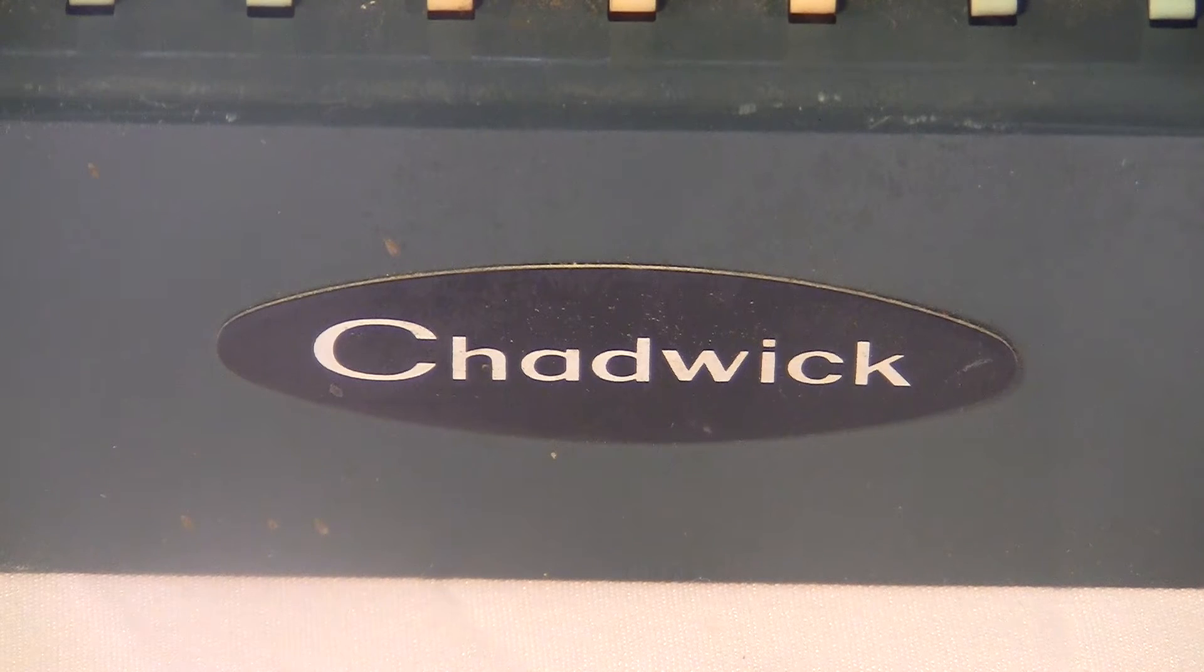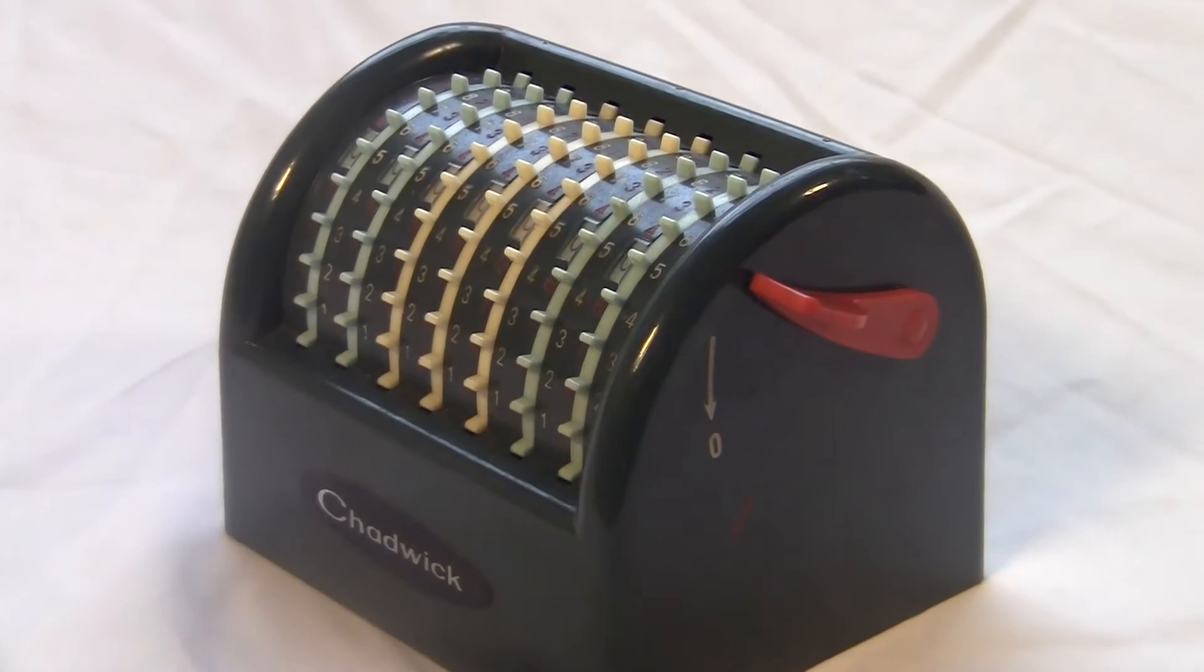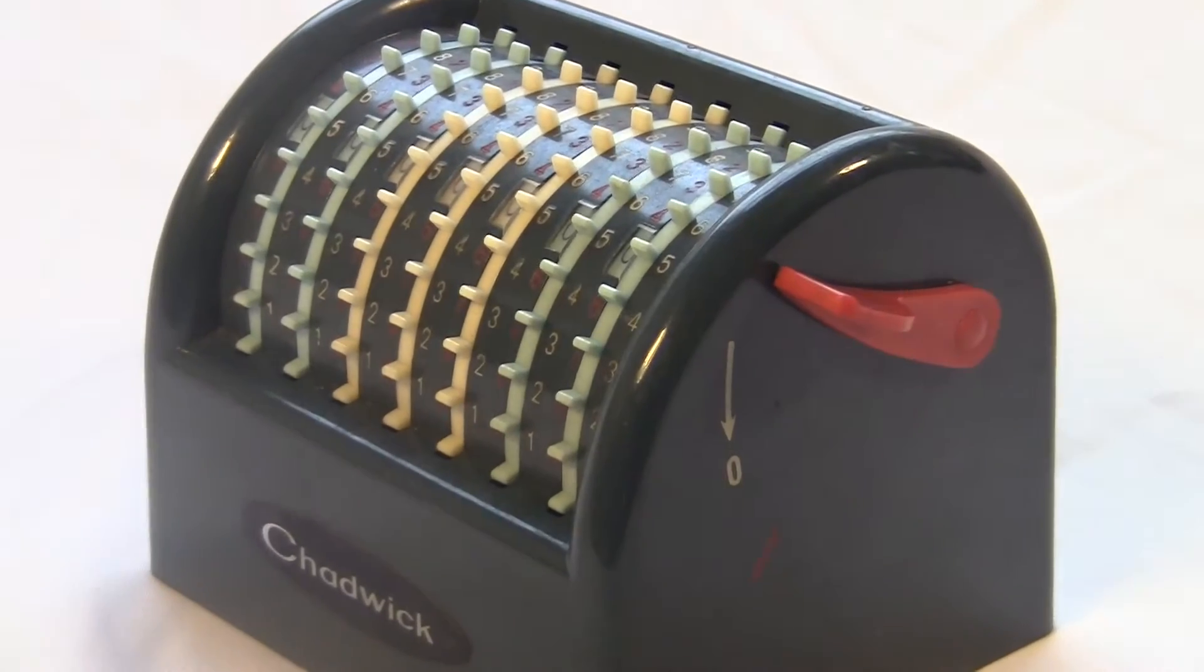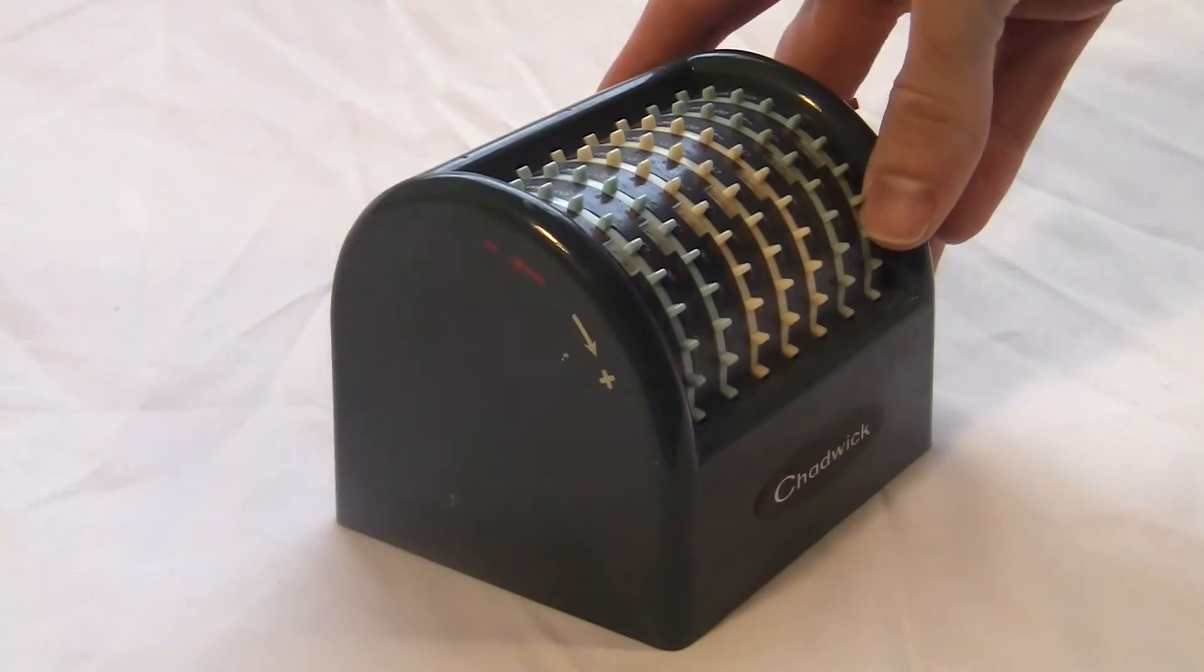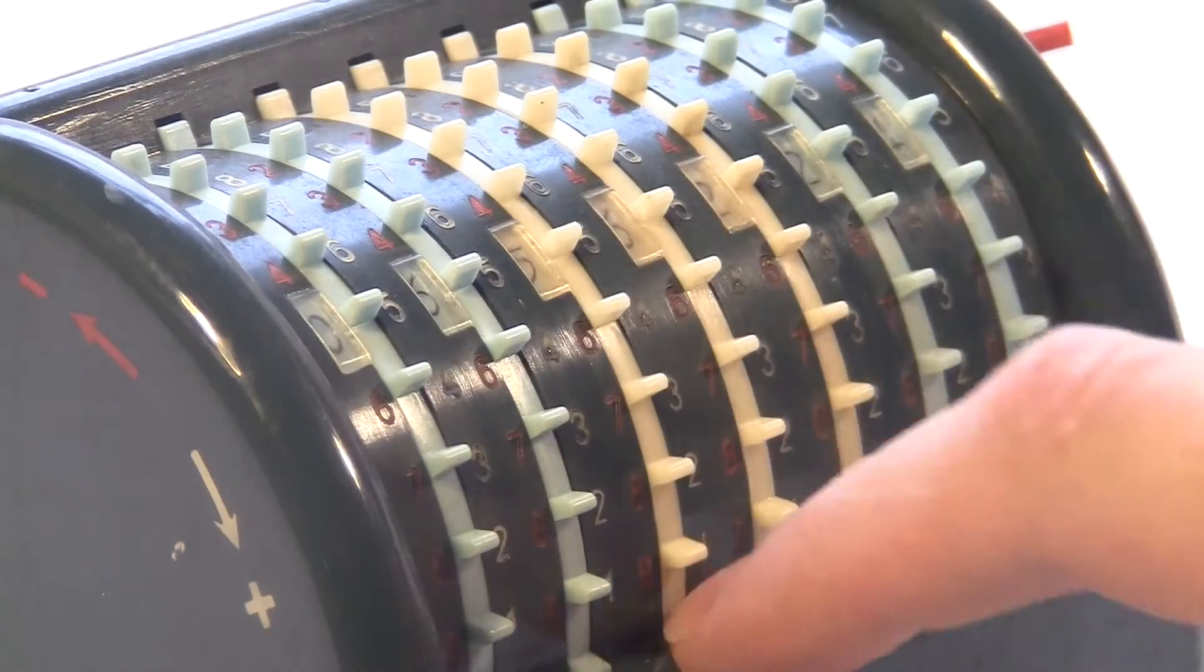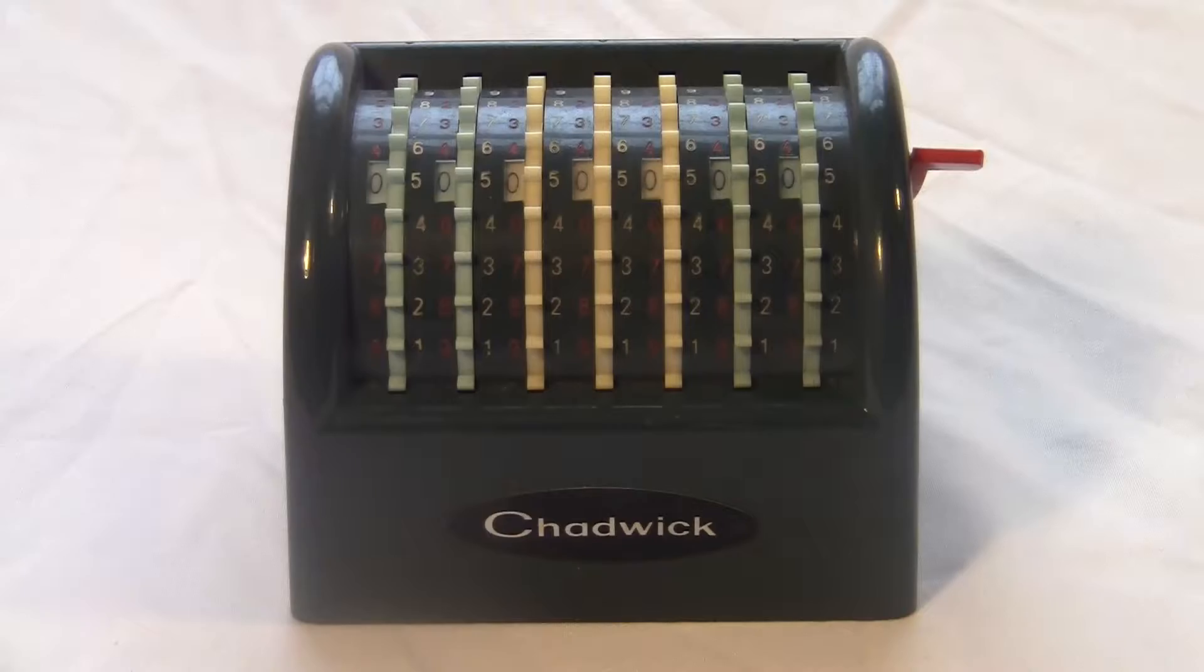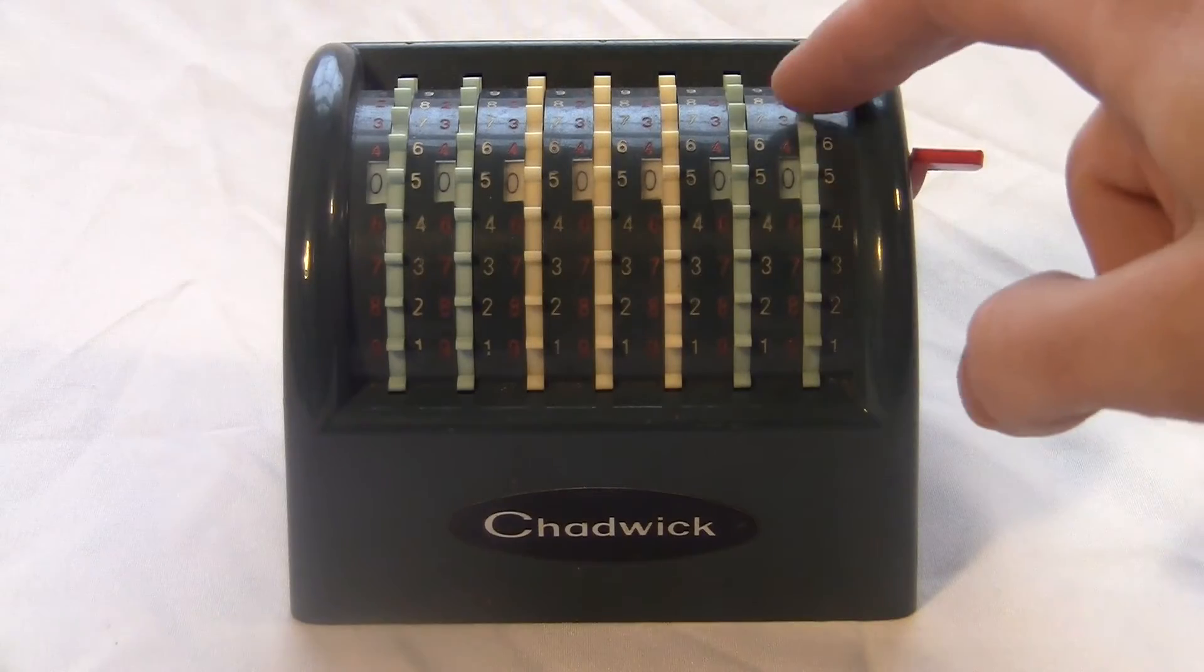It says Chadwick on it. I called it the Chadwick Adding Machine, but I don't think that's really its name. It was sold by an American company called Chadwick Miller Importers. They existed from the 1960s throughout the 1980s. As far as I can tell, Chadwick was an importer of any random stuff they could get from Japan. Whatever they could find, they put the Chadwick logo on it and sold it.